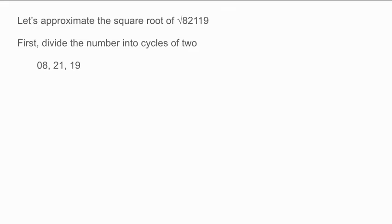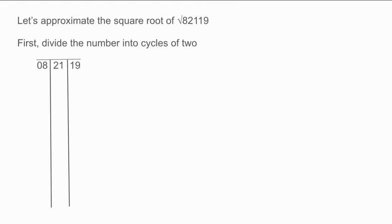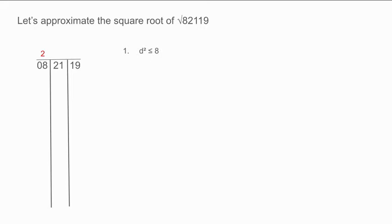First, divide the number into cycles of 2. Thus we have 8, 21, 19. Divide the cycles into columns. We will be obtaining part of our answer in the space above the columns. We begin from the left. To obtain the first digit, we must find the largest digit whose square is less than or equal to 8. The digit we are looking for is 2, and we place it above the 8. This is the first digit of the integer part of our answer. Square 2 and subtract it from 8, obtaining 4. Place 4 in the column below the 8.